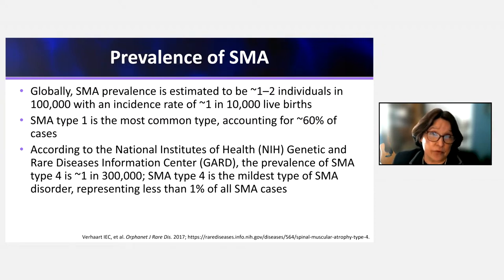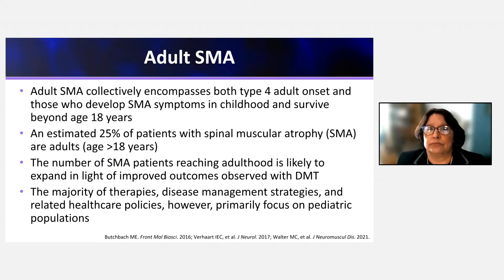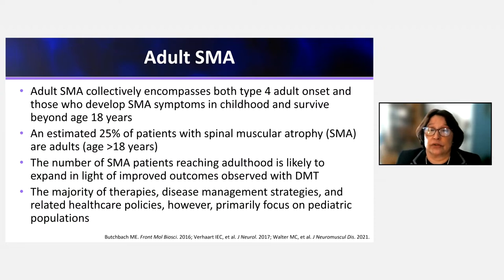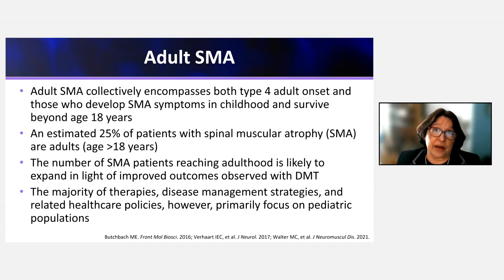SMA type 4, the adult-presenting form, represents less than 1% of all SMA cases. Adults with SMA include that small fraction of type 4 patients — who often suffer delayed diagnosis — as well as pediatric-onset SMA patients who survive until adulthood past age 18. It is estimated that about 25% of patients with spinal muscular atrophy are adults greater than 18 years of age, and this number is expected to expand given the success of early disease-modifying therapies.